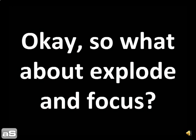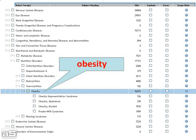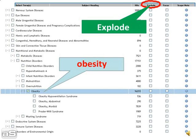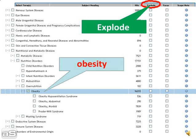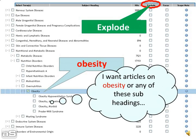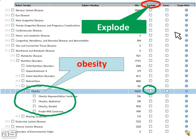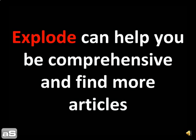So what about explode and focus? These are extra options to apply to your heading. Explode: choose explode and you will select obesity plus all its twigs. I want articles on obesity or any of these subheadings. Explode can help you be comprehensive and find more articles.